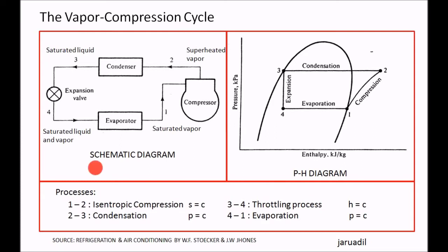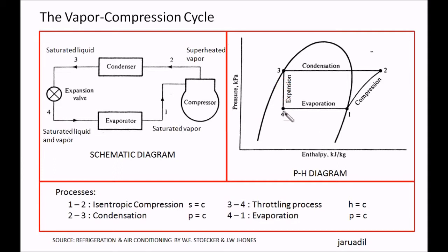We have here the schematic diagram. The cycle of the basic vapor refrigeration: 1 to 2 is compression, as we can see on the pH chart. 2 to 3, the refrigerant passes through the condenser and condensation occurs on the pH chart. Then it goes to the expansion valve at constant enthalpy, 3 to 4. Then back to 1 — passing through the evaporator through evaporation. So this is the basic vapor compression cycle.